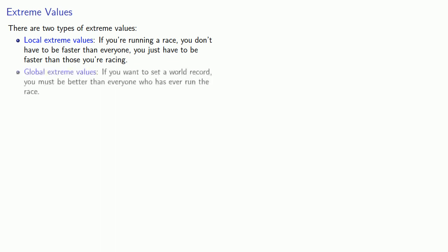It's convenient to distinguish between two types of extreme values. First, there are local extreme values. If you're running a race, you don't actually have to be faster than everyone. You just have to be faster than those you're racing against. Then there's also global extreme values. If you want to set a world record, you must be better than everyone who has ever run the race.